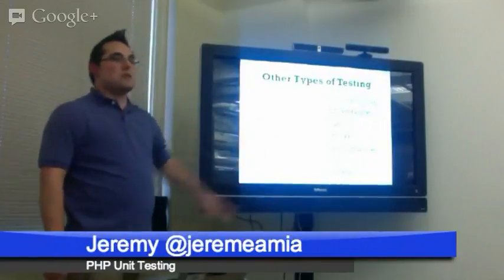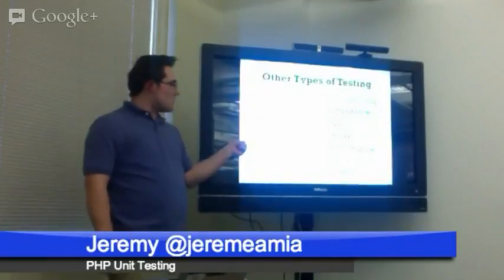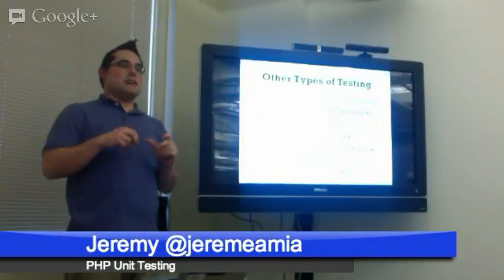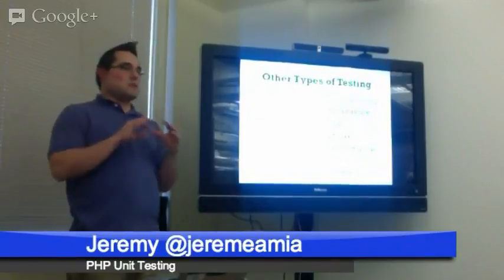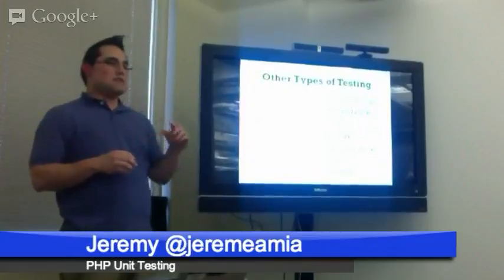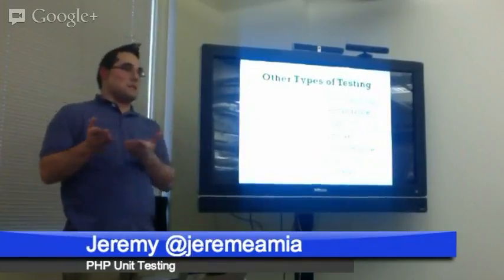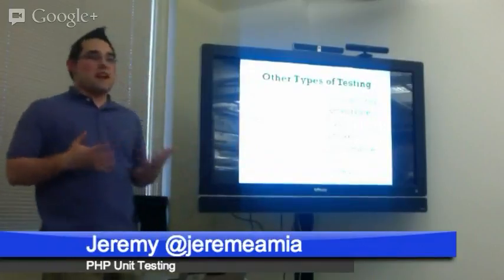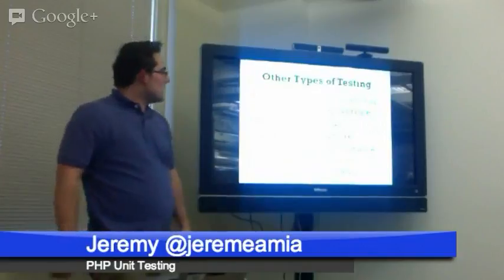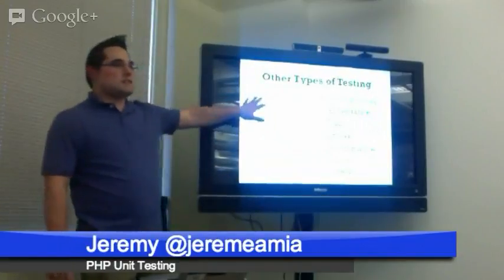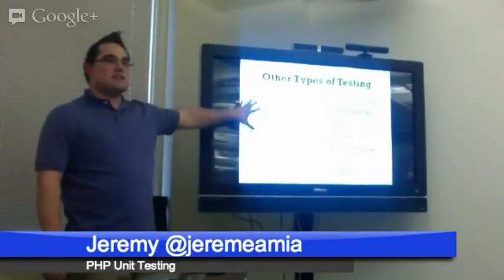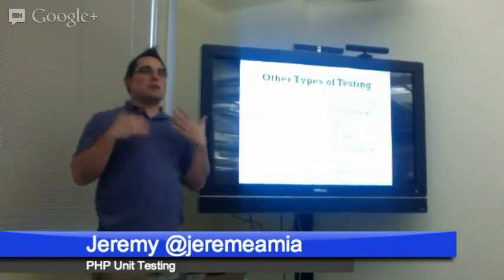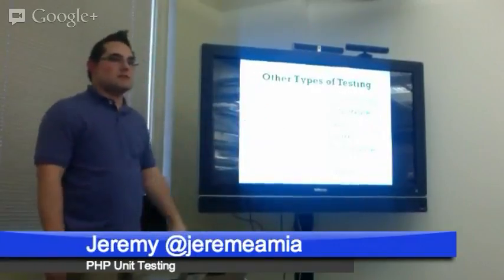Mutation testing is an interesting one. A mutation testing framework will take your unit tests, modify the code, and try to run those unit tests — you can find out interesting things about your code that way. For example, if your unit test is modified to use a different value in one place, does your test still pass? All of these — unit, regression, integration, and mutation testing — are grouped into what we call white box testing. When writing these kinds of tests, you actually know what the code is and how it works, so you're writing tests based on your knowledge of the code.